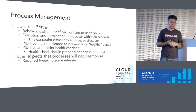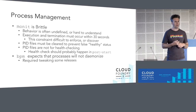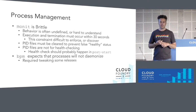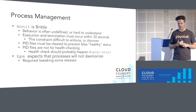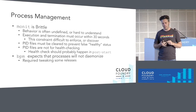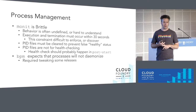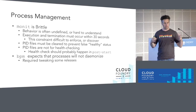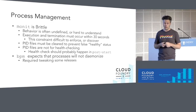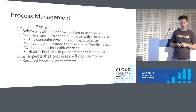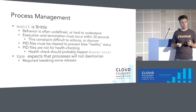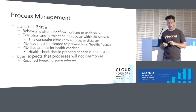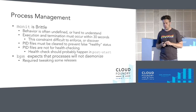Process management: Monit, as many of you know, is relatively brittle. Fun fact — Monit communicates with the agent via SMTP. Monit often has undefined or hard-to-understand behavior. Execution and termination of a job must occur within 30 seconds or Monit breaks and starts doing weird things — most people don't know this and it's hard to discover. PID files have to be cleared to prevent false healthy status: if a job dies, the PID file still has a PID in it, something else starts up and picks up that PID, and Monit gets confused. Health checks probably should happen in Bosch's post-start, not via PID files.